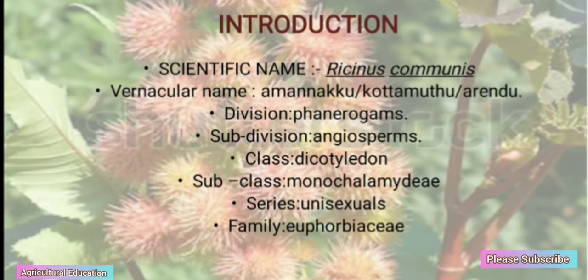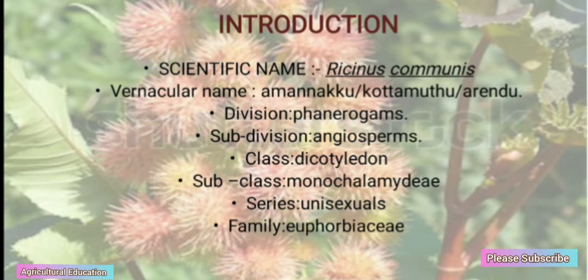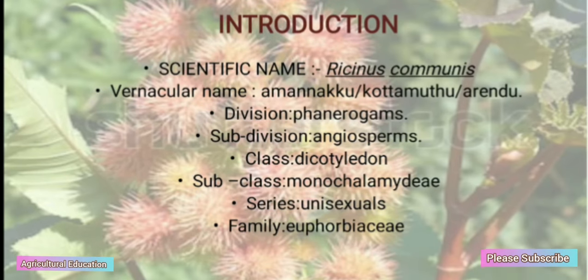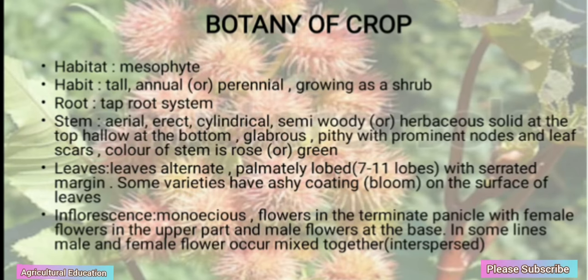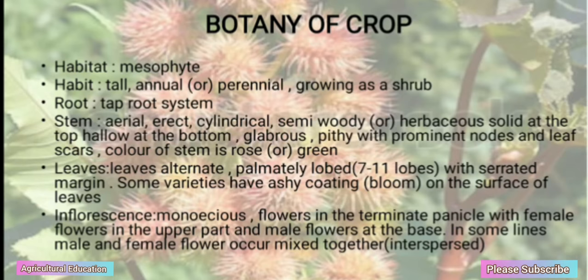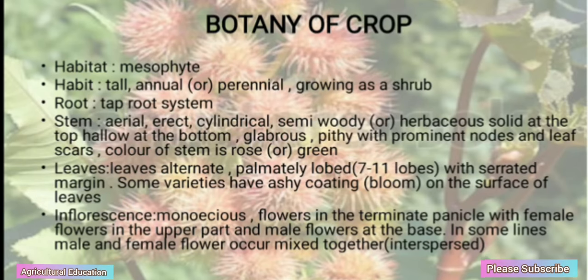Scientific Name: Ricinus communis. Family: Euphorbiaceae. Botany of the Crop — Habit: Tall, annual or perennial, growing as a shrub.